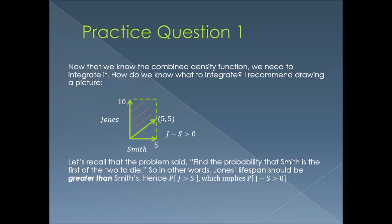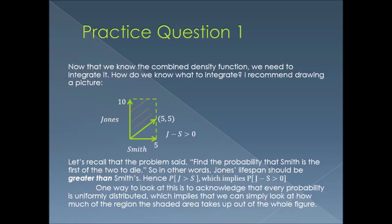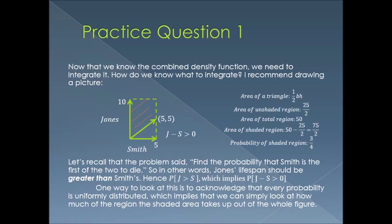With inequalities, you always want to shade the region being described — the shaded region is shown by the red lines. Since every probability is uniformly distributed, we can simply look at how much of the region is shaded. I found the area of the blank triangle formed by Smith and the line: one-half base times height, with base 5 and height 5, giving 25/2. The total region is 50, so the shaded region is 50 minus 25/2, which gives 75/2.